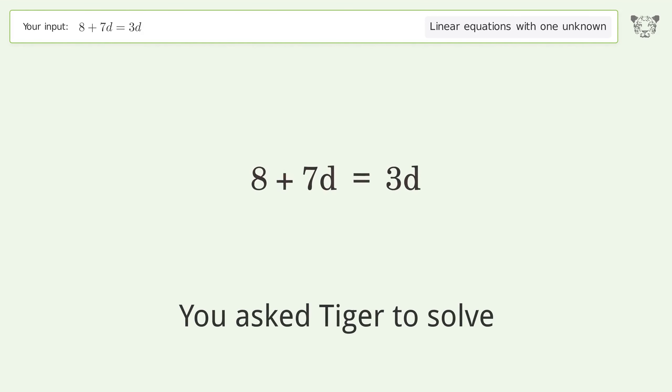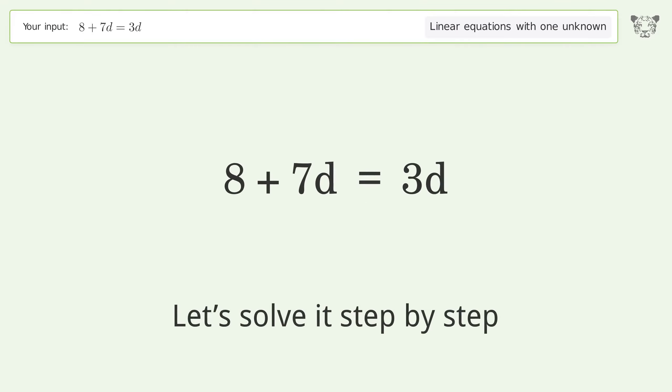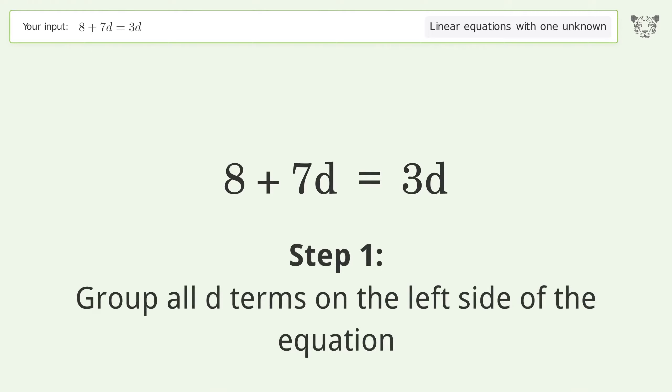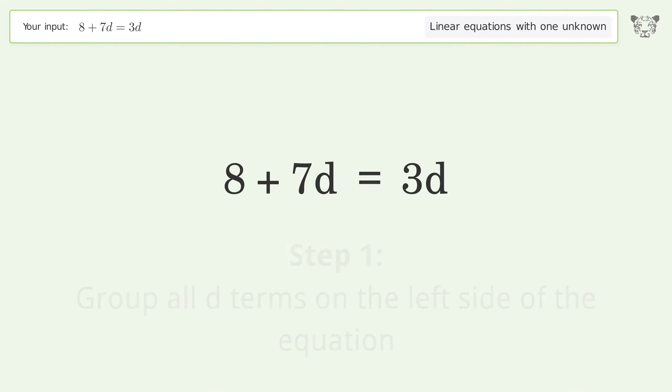You ask Tiger to solve this, which deals with linear equations with one unknown. The final result is d equals negative 2. Let's solve it step by step. Group all d terms on the left side of the equation. Subtract 3d from both sides.